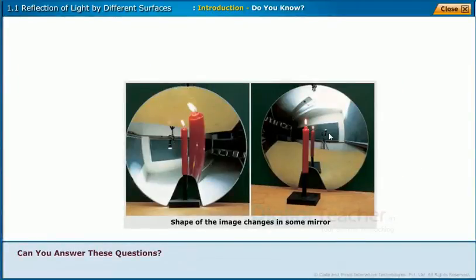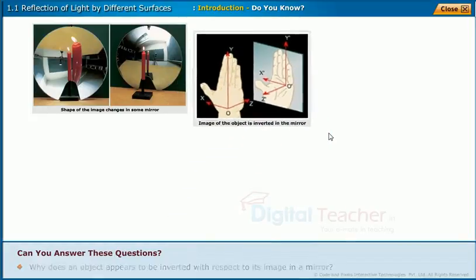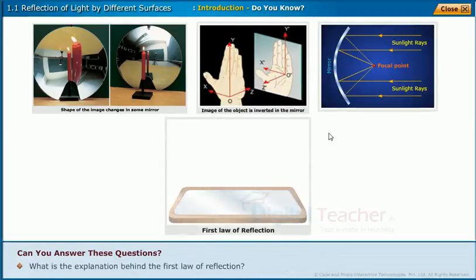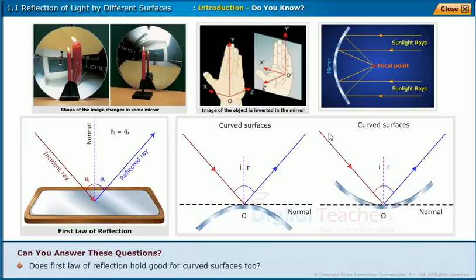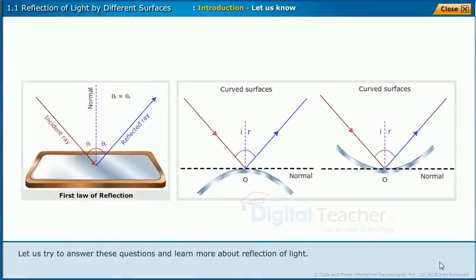Can you answer these questions? Why does the shape of our image change in some mirrors? Why does an object appear to be inverted with respect to its image in a mirror? Is it possible to focus sunlight at a point using mirrors instead of a magnifying glass? What is the explanation behind the first law of reflection? Does the first law of reflection hold good for curved surfaces too? Let us try to answer these questions and learn more about the reflection of light.